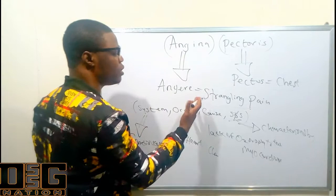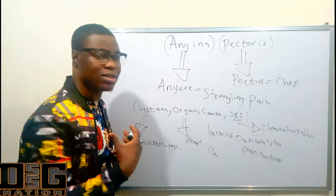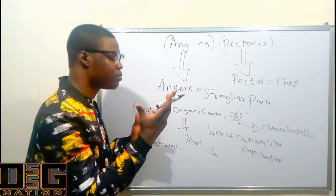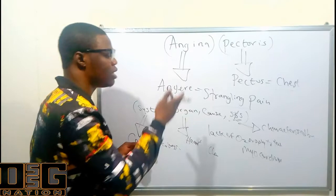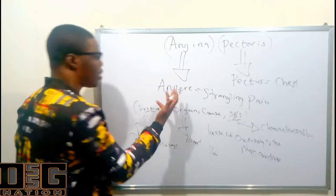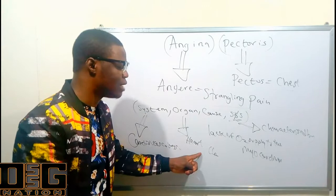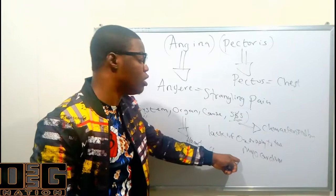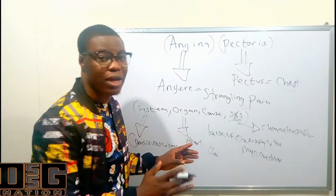Quick recap: angina comes from 'angia,' meaning a strangling pain, and pectoris from 'pectus,' meaning the chest. To define angina pectoris, follow the framework — system affected: cardiovascular system; organ affected: the heart; cause: lack of oxygen to the myocardium, which is the muscular layer of the heart; sign or symptom: strangling chest pain.